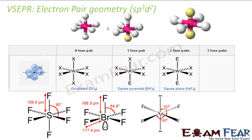For SP3D2 hybridization: with no lone pair, for example SF6, you get the octahedral shape where each bond angle is 90 degrees. If you remove one bond pair and replace it with a lone pair — for example BrF5 — the angle changes from 90 degrees to 84.8 degrees, giving a square pyramidal shape. If you put two lone pairs, they repel each other and you get a square planar shape. So depending on the repulsion from lone pairs and bond pairs, you get octahedral, square pyramidal, or square planar shapes.